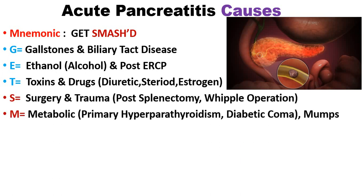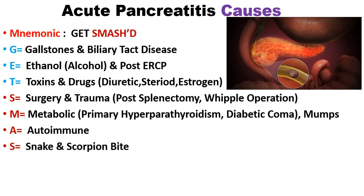M is for metabolic causes. The metabolic causes include primary hyperparathyroidism, diabetic coma, uremia, and mumps infection. A is for autoimmune disorder, which can also cause acute pancreatitis.